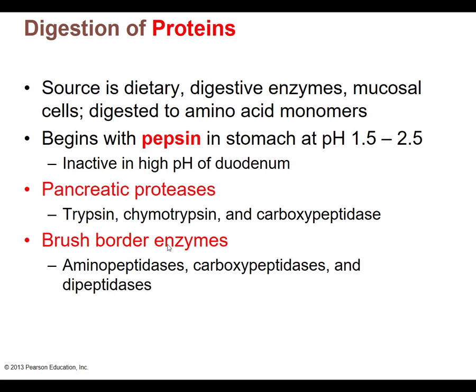Now, breaking down proteins. Where do we get our proteins? Dietary proteins we eat, digestive enzymes — which are themselves proteins and must also be broken down — and mucosal cells that constantly slough off and release protein. Protein breakdown begins in the stomach with the enzyme pepsin. Pepsin doesn't end in '-ase' like most enzymes, but it is an enzyme that breaks down proteins. For pepsin to work it needs a very low pH — around 2 — which is exactly what the stomach acid provides.